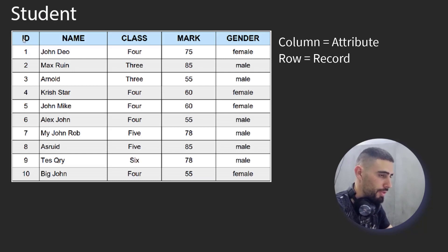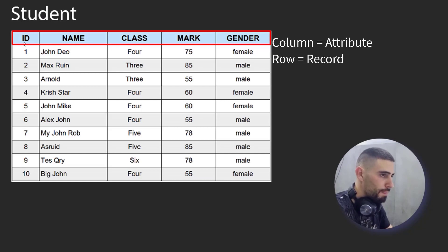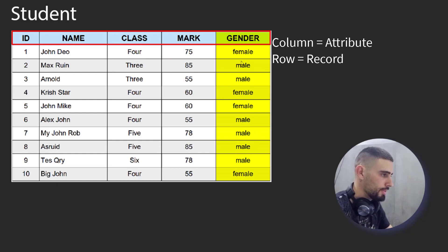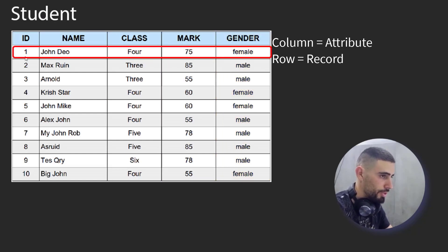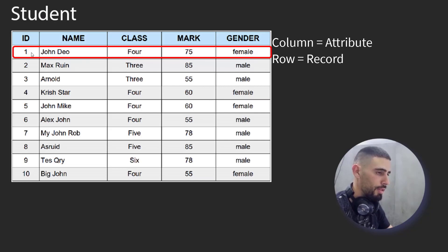We have here five columns or five attributes. The first one is ID, then we have the name column, class, mark, and gender. In each column you can save a specific value: the ID column saves numbers, the name column saves strings, the class column saves strings, the mark column saves numbers, and the gender column saves strings. There are also ten rows or ten records. For example, the ID of the first student is 1, the name is John, the class is 4, the mark is 55, and the gender is female — and so on for the other nine records.